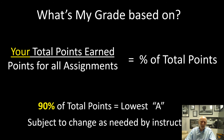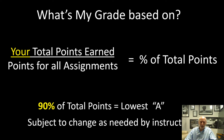Your grade will be based on total points earned divided by the points for all assignments, giving you a percentage. For example, 90% equals the lowest A, 80% for a B, 70% for a C, and 60% for a D. Sometimes I need to make changes to that, but it's not very often, and I'll let you know as soon as I do.